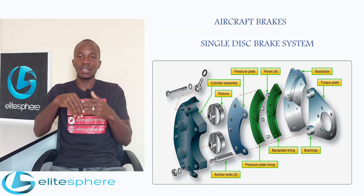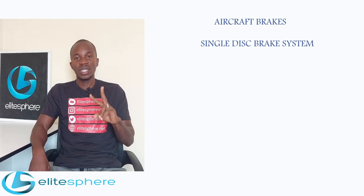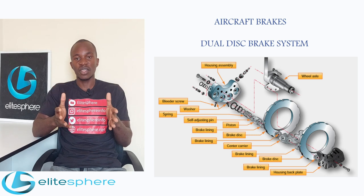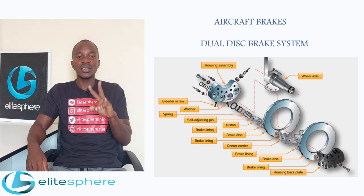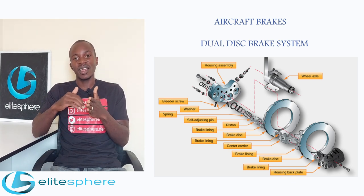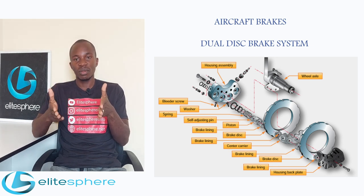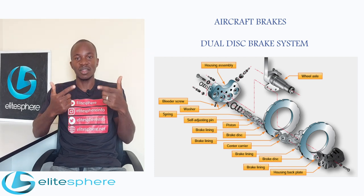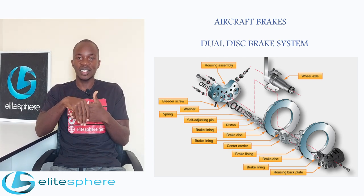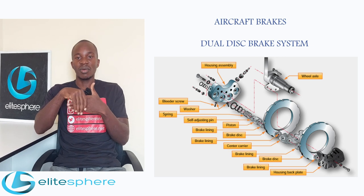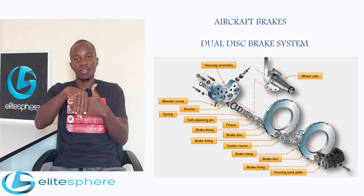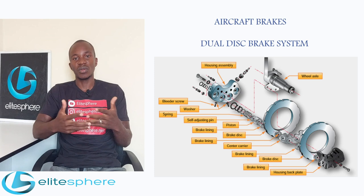For a dual disc braking system, which also falls under the direct braking classification, we have two discs installed on each main wheel. These discs are separated by a carrier in between them. The discs are installed on the main wheel and rotate with it, and we have a caliper with linings and a piston that, whenever brake pressure is applied, apply a braking pressure on the discs, causing friction that slows the aircraft down and eventually stops it.